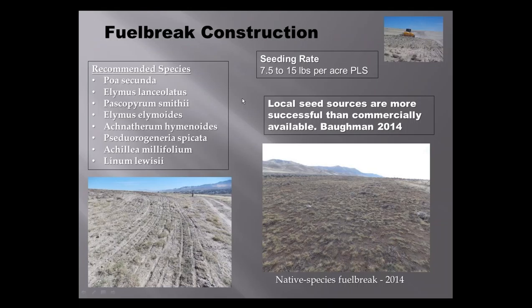Seeding rates we recommend: anywhere from 7.5 to 15 pounds per acre PLS — pure live seed — seeded really high. Species I recommend include Sandberg's bluegrass, thick spike wheatgrass especially in sandy areas, western wheatgrass if you're at a higher elevation in a 10-inch precip zone, squirrel tail, Indian ricegrass for sandy sites, bluebunch wheatgrass, and forbs like yarrow and flax. We know that using a local seed source is going to be more successful than commercially available alternatives — supported by data from Owen Baumann's 2014 thesis. The native species fuel breaks look really good with really low fuel loading.